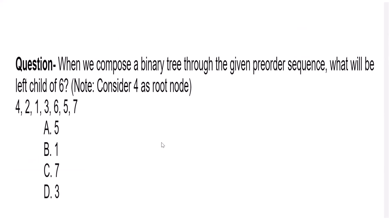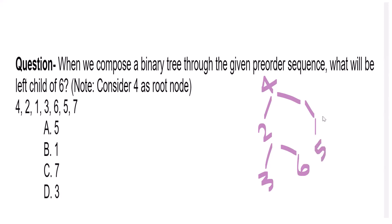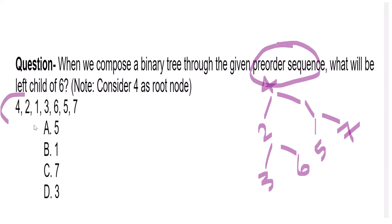This next question is very important because many students miss a key word. Most students will just read 'construct a binary tree from these nodes' and draw it straightforwardly. But what is actually given is a pre-order sequence — and that is the word you must not miss. Pre-order sequence means the nodes are listed in the order they are visited during a pre-order traversal.